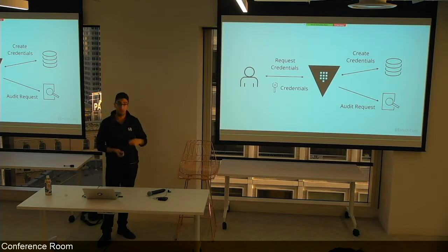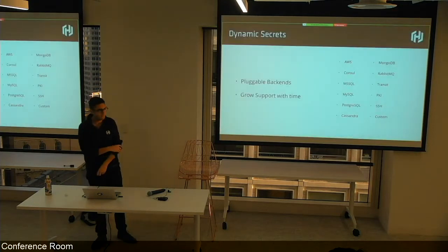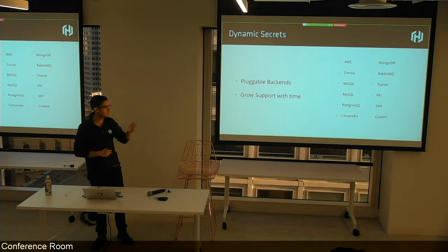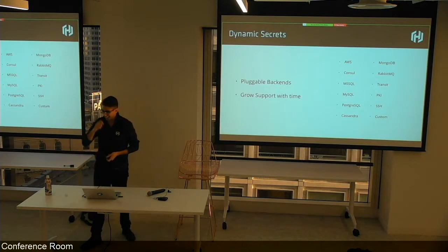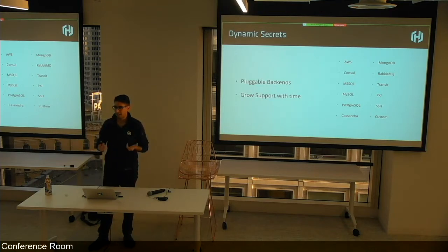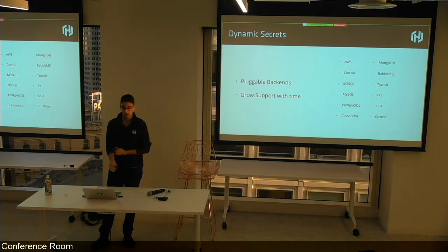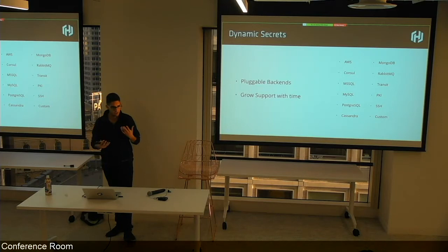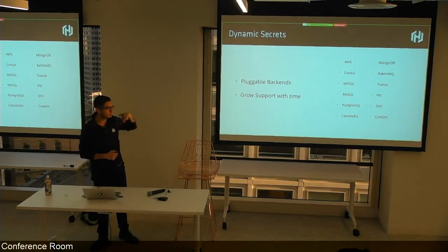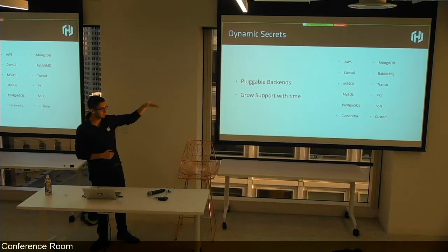Vault needs to be API-aware of the underlying system to generate sub-credentials. There's a set of pluggable backends that support this, and the list is constantly growing. It works for databases — the most common example — but also cloud brokers like AWS, where you can generate sub-IAM or STS tokens that are time-bound. It works for Consul for time-bound service discovery access, traditional RDBMS systems, messaging systems like RabbitMQ, and more.